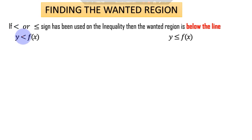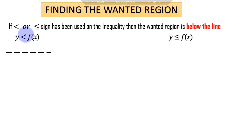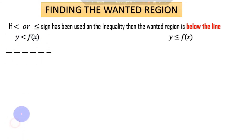For y less than f(x), we draw a broken line and the wanted region is below the line. Since we shade the unwanted region, we shade above the line. The same applies for y less than or equal to f(x) — the wanted region is still below, so we shade above the line. The area below represents the wanted or feasible region.